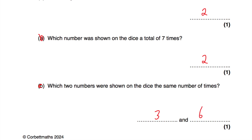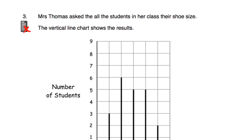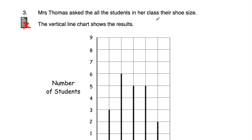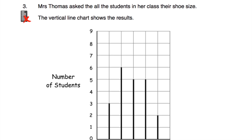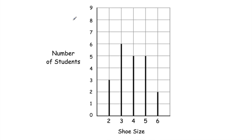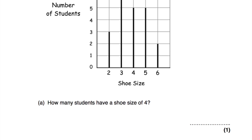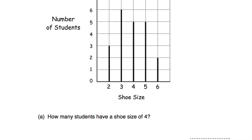Question number three: Mrs Thomas asks all the students in her class their shoe size and the vertical line chart shows the results. We've got the number of students going up vertically and the shoe size going across horizontally. Three students had a size two, six students had a size three, and so on. Part A says how many students had a shoe size of four? That is five students.